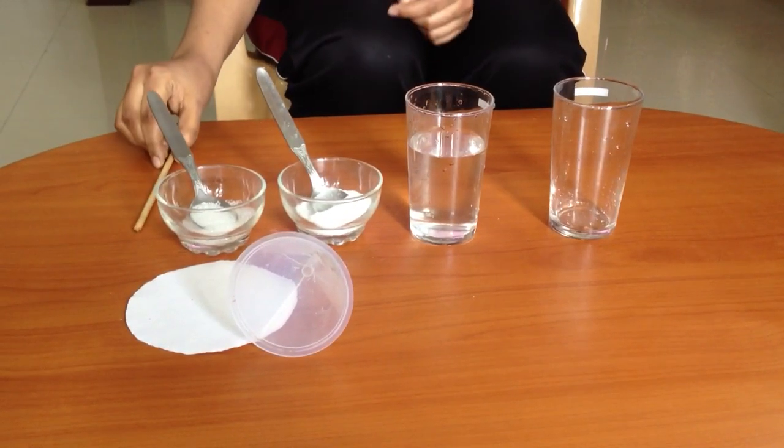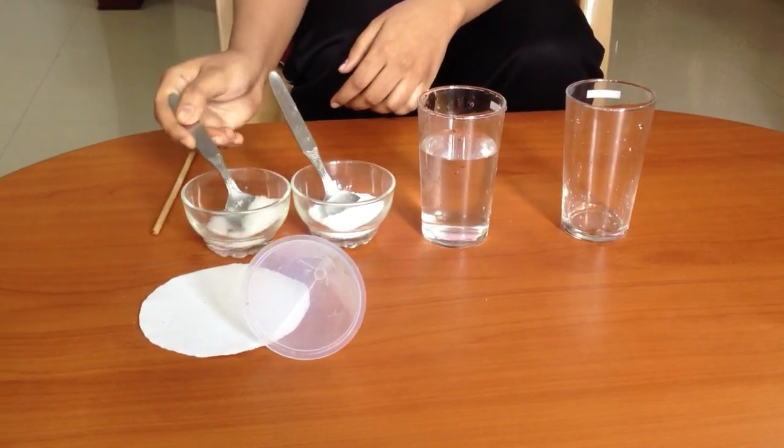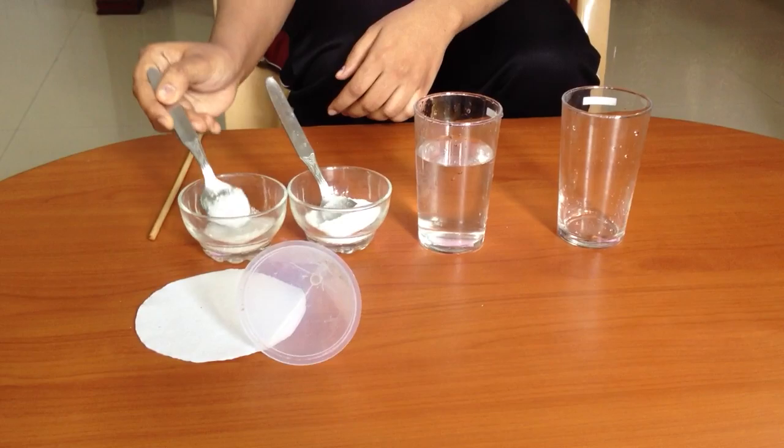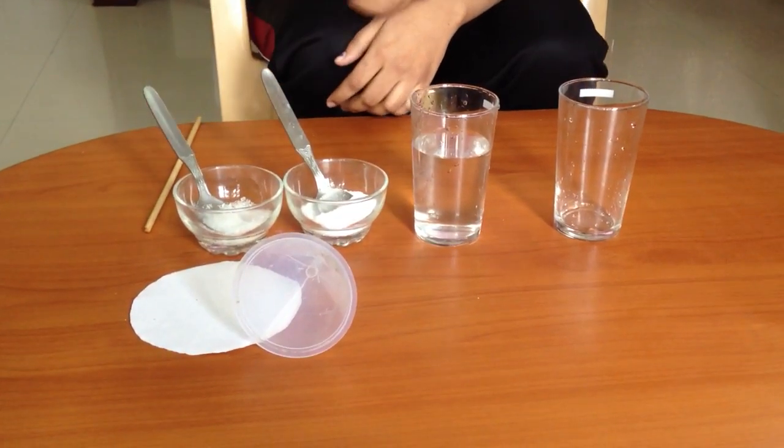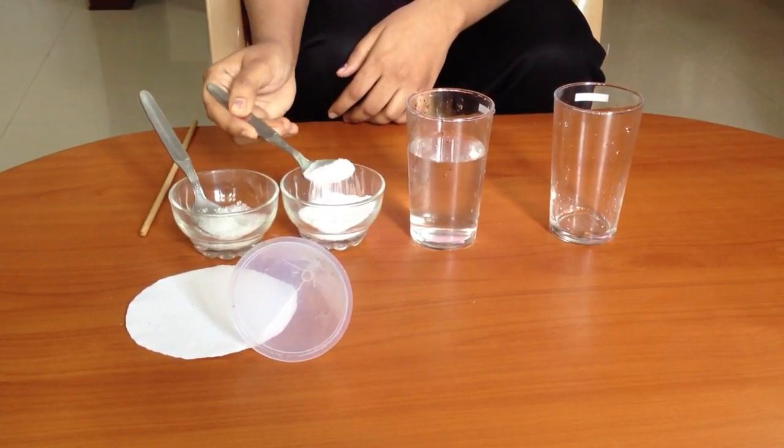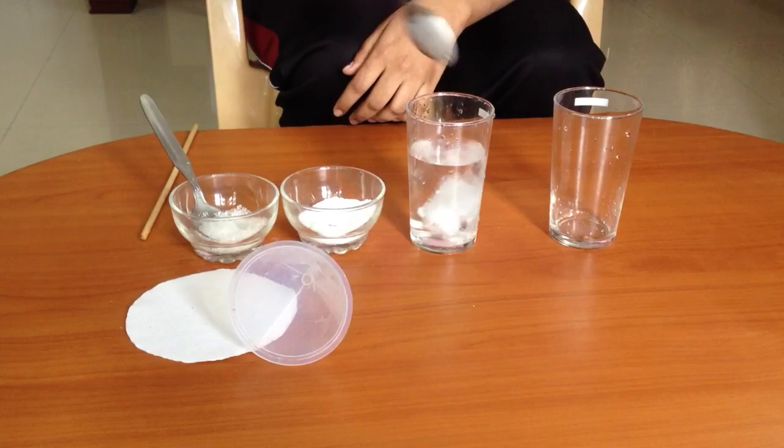We have made the tap water hard by adding a teaspoon of Epsom salt to it. Now add one spoon of washing soda to this hard water and stir it.